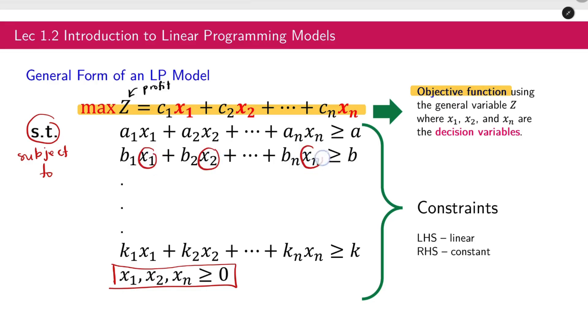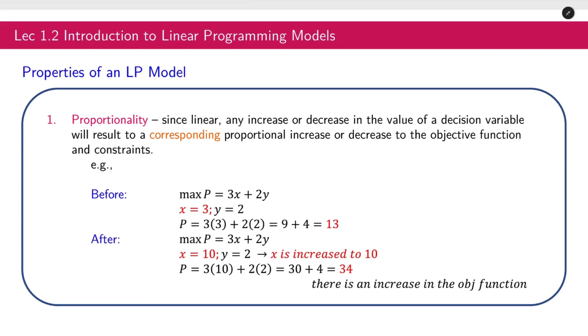When you say linear, you have a variable here in degree 1. Before we formulate the linear programming model, let's talk about the properties. First, proportionality. Since LP models are linear, any increase or decrease in the value of a decision variable will result in a corresponding proportional increase or decrease to the objective function and the constraints.